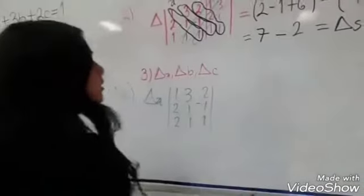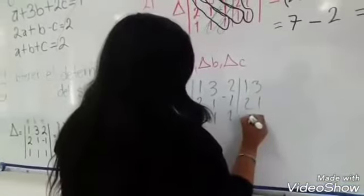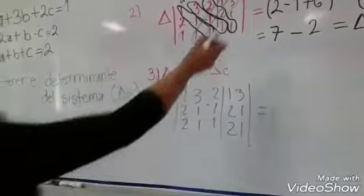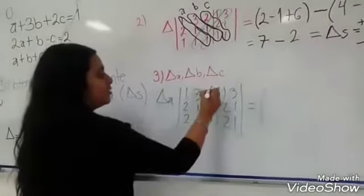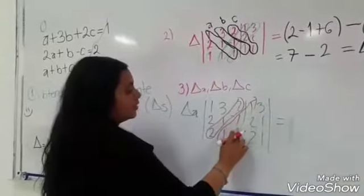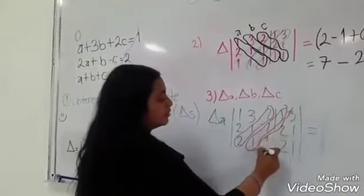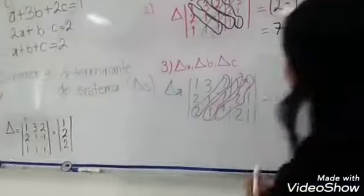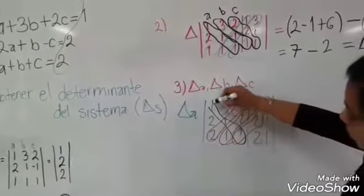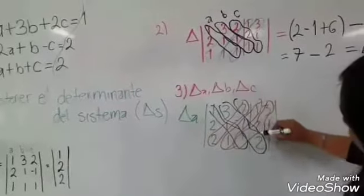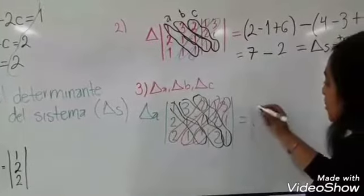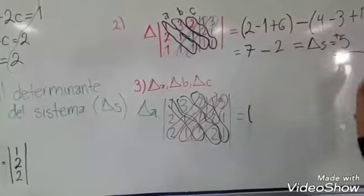Y se hace lo mismo: se agregan las dos primeras columnas del lado derecho: 1, 3, 2, 1, 2, 1. Y vamos a sacar las líneas de la misma manera como hicimos aquí. Sacamos la primera línea, la segunda línea y la tercera línea. Y entonces vamos a proceder a sacar los términos de los dos lados — son 3 más 3 más 3 términos — y los vamos a empezar a multiplicar de la misma manera que aquí arriba.